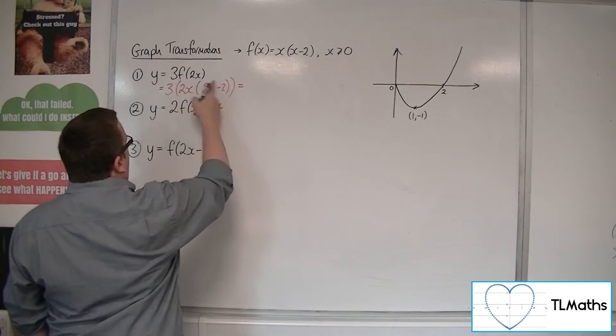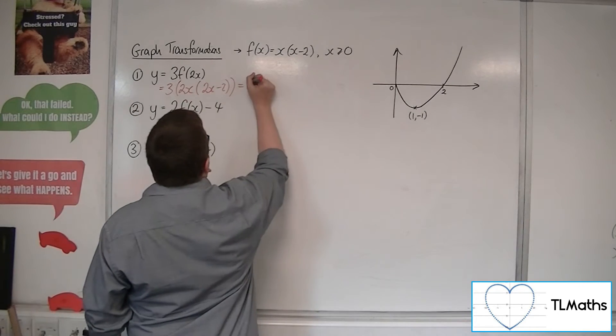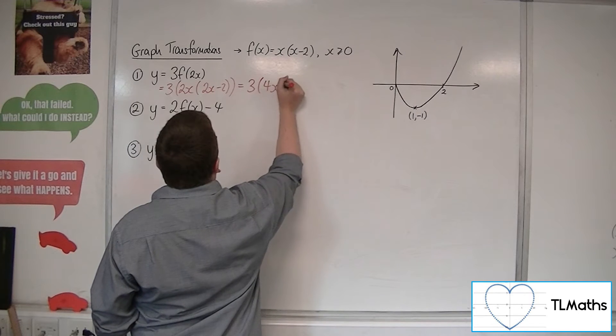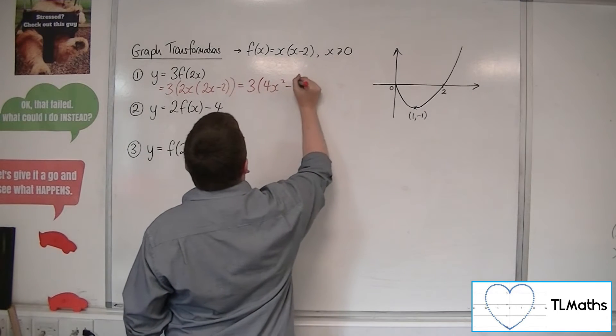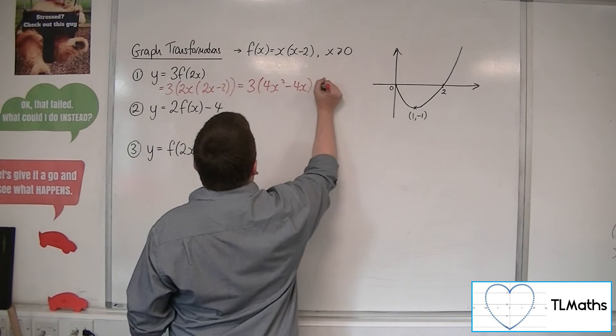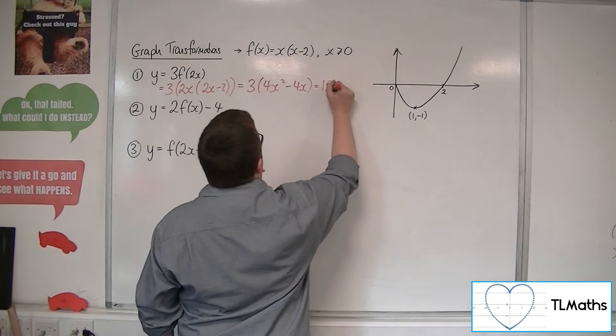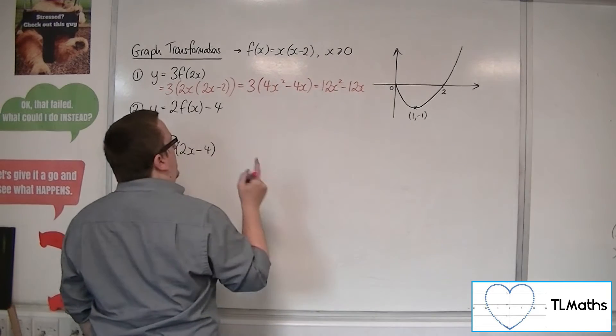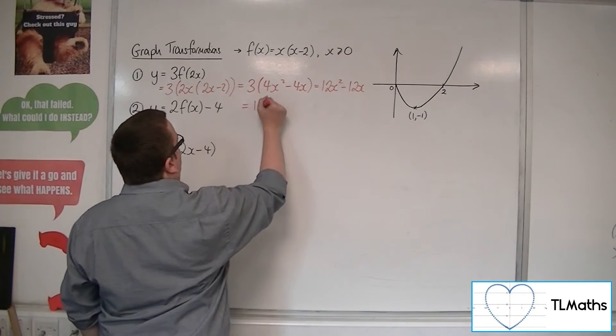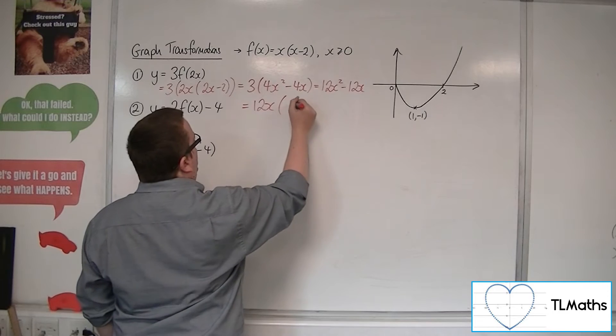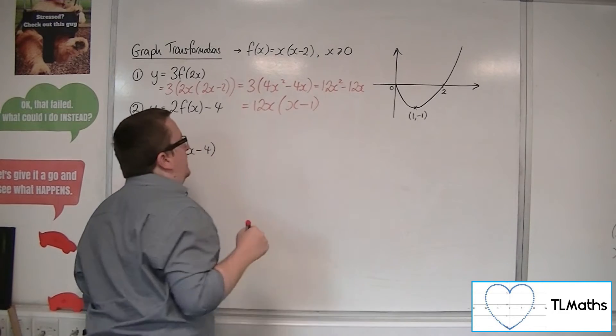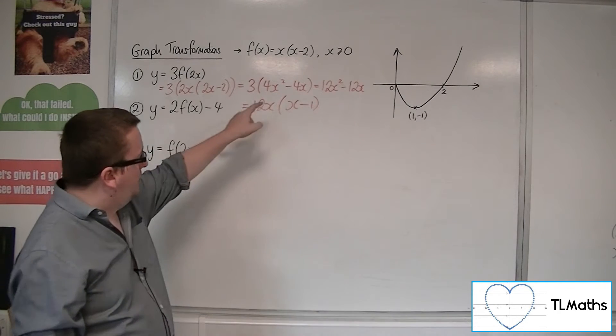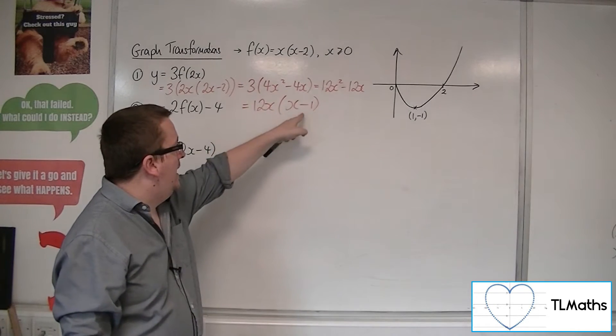So this is 3 lots of 2x times 2x minus 2. Expanding the inner bracket first, we're going to have 3 lots of 4x squared minus 4x, which gives 12x squared minus 12x. If I refactorize that, I can bring the 12x outside and have x minus 1 inside, so it's easily being spotted as a curve that is crossing the x-axis at 0 and 1.